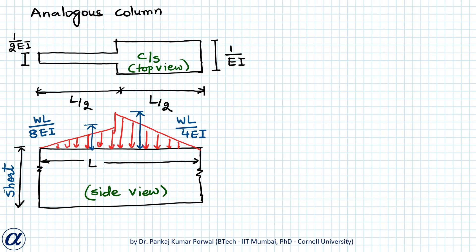We find the pressure at the base of the column using p = F/A ± M'/I' · x, where F is the resultant of the distributed load on top of the analogous column, A is the area of the cross-section of the analogous column, M' is the moment due to the distributed load about the centroidal axis, I' is the second moment of area of the cross-section about the centroidal axis, and x is the distance from the centroidal axis.